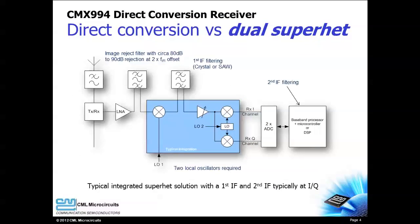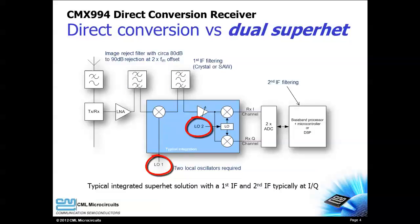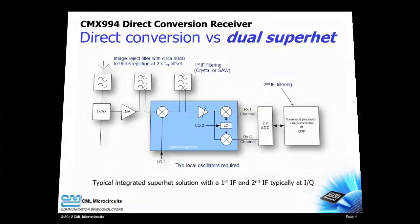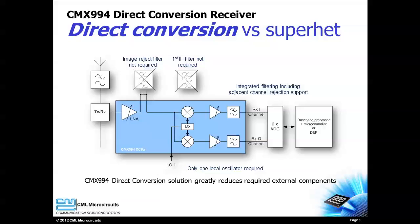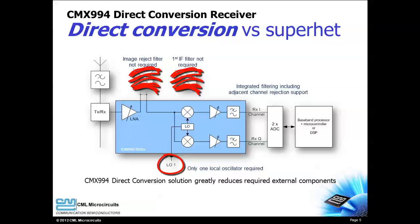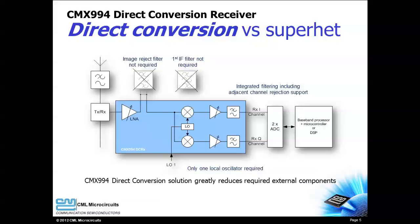In a classic dual superhet design, expensive filters are required for image rejection and IF filtering, and two LO sources are needed for the down conversion mixers. But the direct conversion approach eliminates the need for those expensive filters and only one LO source is required. Direct conversion represents the highest integration and lowest bill of materials cost for high performance designs.